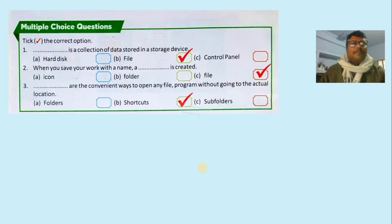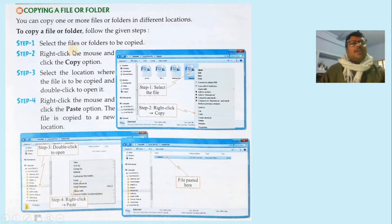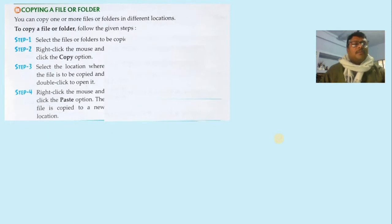Now the next topic: copying a file or folder. To copy a file or folder from one location to another, select the file, right-click with the mouse, and choose the 'Copy' option. Then open the location where you want to copy it, right-click again, and choose the 'Paste' option. You can also use shortcut keys to do the same thing.